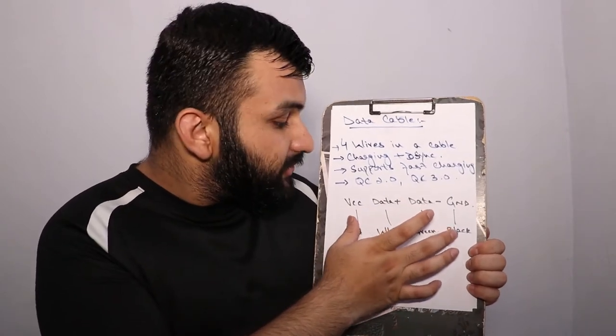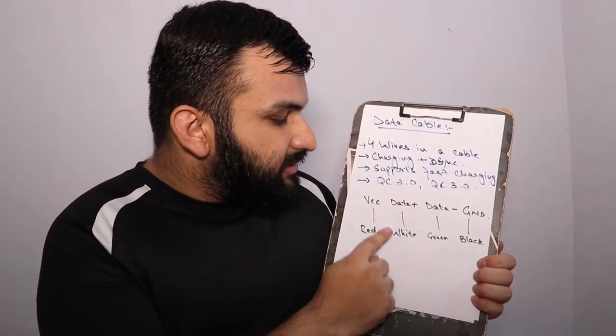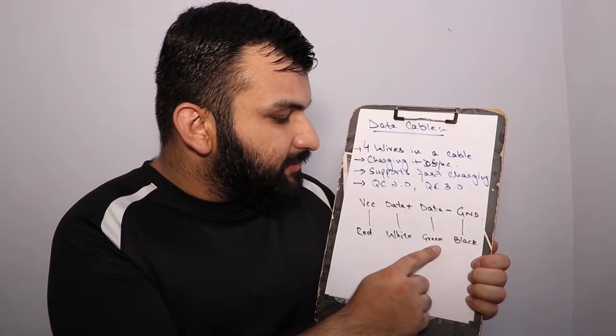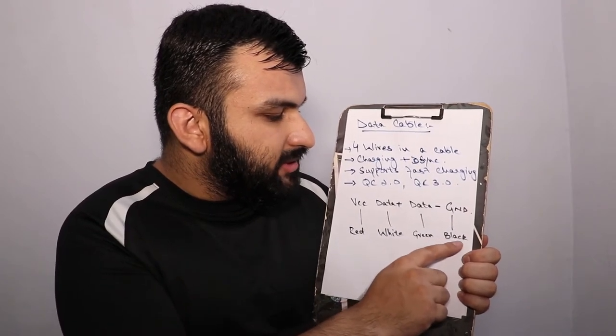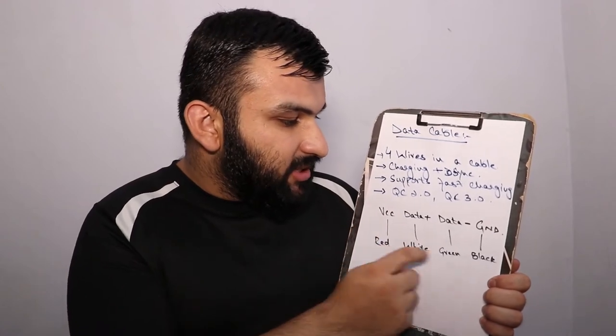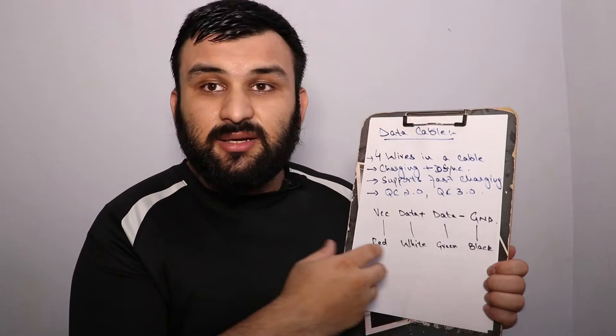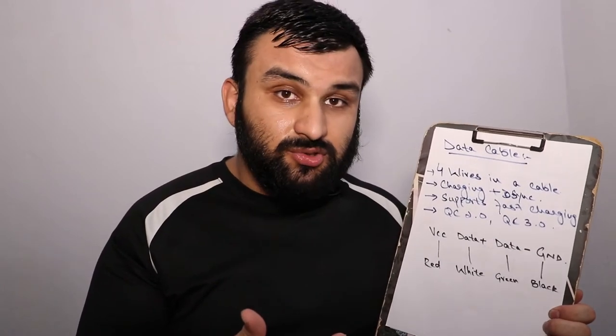The data cable has four wires: VCC is the red one at 5 volts, data-plus is the white one, data-minus is the green one, and ground is the black one at 0 volts. The data-plus and data-minus lines are used for communication like sync, or in the case of fast charging, for the Quick Charge 2.0 or Quick Charge 3.0 protocols.